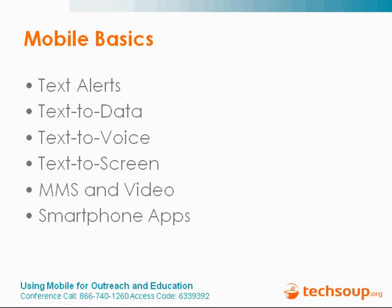The fourth campaign type is text to screen, where people are texting in and their messages are appearing on a scoreboard or jumbotron, usually at a live event. You can also push it to the Internet so people can text in, and you can moderate the messages and then display them. Then there's MMS and video. MMS is like picture messages. There aren't as many standards with MMS as with SMS, so different carriers treat MMS differently — it's not as smooth yet, and it's also a little expensive. Same thing with video — the usage just really isn't there yet, but it's definitely coming soon.